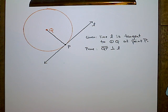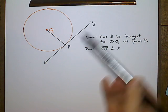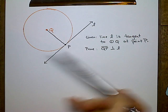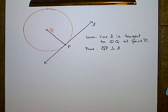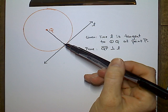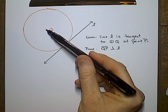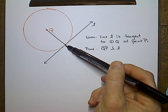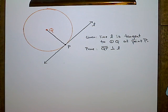In this video, we are going to prove that any line tangent to a circle is going to be perpendicular to the radius that connects the center of the circle to the point of tangency.